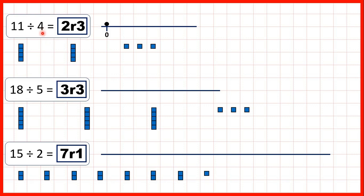Now notice there's a pattern here. 4 times 2 is 8, plus 3 is 11. 5 times 3 is 15, and then 15 plus 3 is 18. And 2 times 7 is 14, and then from 14 we need 1 more — we need to add 1 to get to 15.